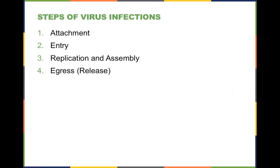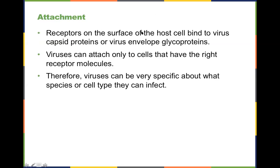How does a virus actually get in? There are four basic steps: attach, entry, replication, and assembly of all the viral infectious materials, and then egress — how it actually gets out. Thinking about COVID-19 and the mask debate: any idiot who said you shouldn't wear a mask should be forced to become infected by something. Viruses will find any way they can to get in and out of your body, and COVID-19 is no different. Attachment involves receptors on the surface of a cell usually binding through a virus envelope glycoprotein, making the virus very specific about what type of cell it will infect.